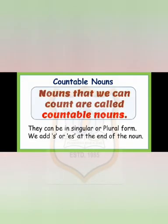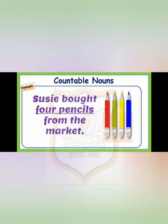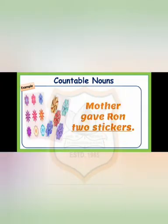Countable nouns are nouns that we can count. They can be in a singular or plural form. We add S or ES at the end of the noun. For example, Susie bought 4 pencils from the market. Mother gave Ron two stickers.